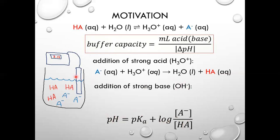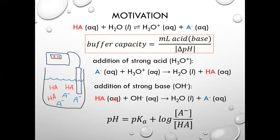Conversely, if I add a strong base to my buffer — sodium hydroxide in our experiment — it will react with and be neutralized by the weak acid component, acetic acid, to produce water and more of the acetate ion. The pH will increase, but only insignificantly. By the addition of a strong base, I'll have less of the weak acid, so that concentration goes down slightly, while the conjugate base concentration goes up. But the log of a small increase in this ratio gives us an overall small increase in pH.